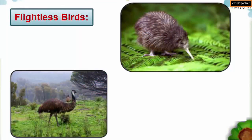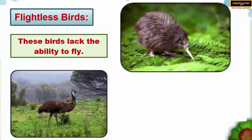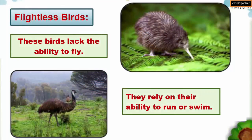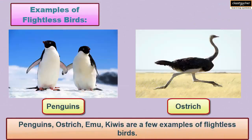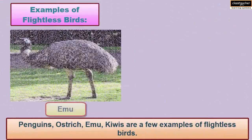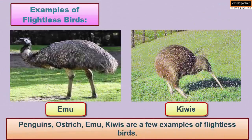Flightless Birds: These birds lack the ability to fly. They rely on their ability to run or swim. Penguins, Ostrich, Emu, and Kiwis are a few examples of flightless birds.